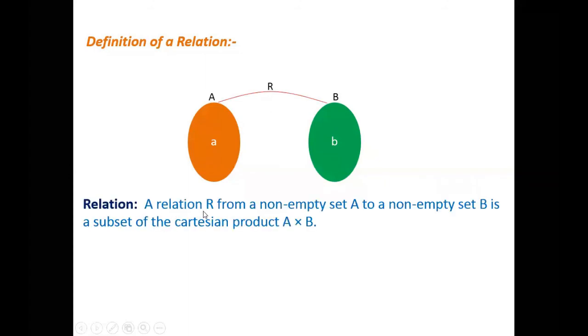Now, the definition of a relation: how do we define it? These are two sets where the first set contains A and the second set contains B under a relation R. A relation R from a non-empty set A to a non-empty set B is a subset of the Cartesian product A and B. So R is a subset of Cartesian product A cross B.